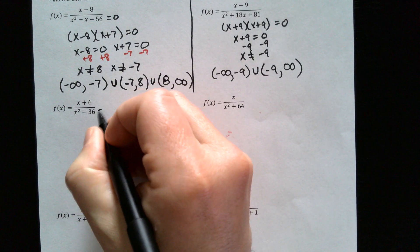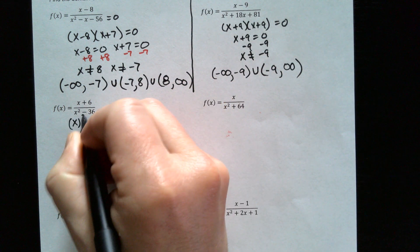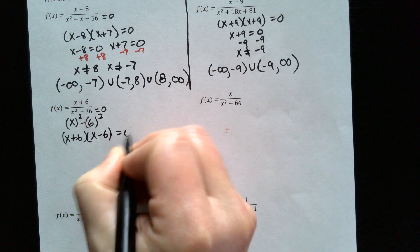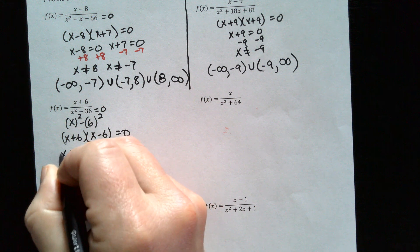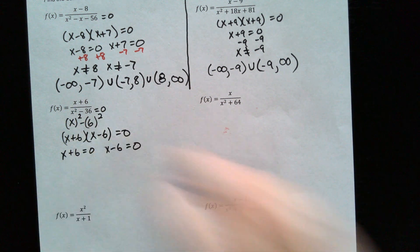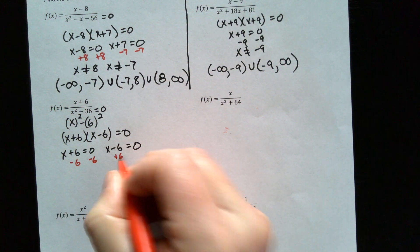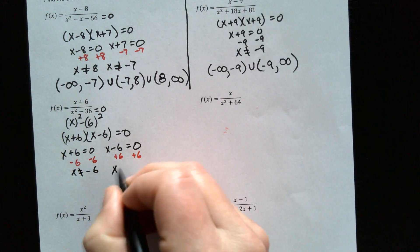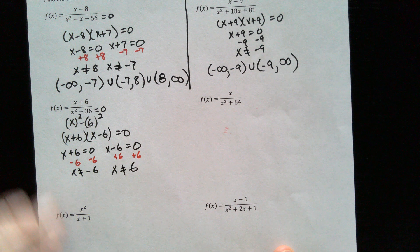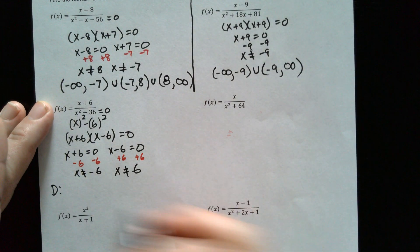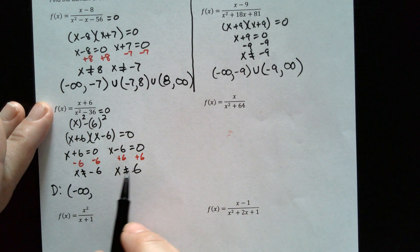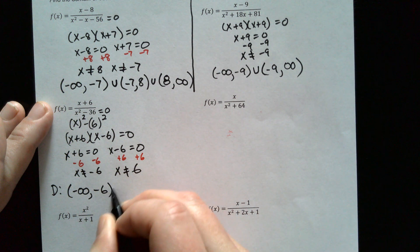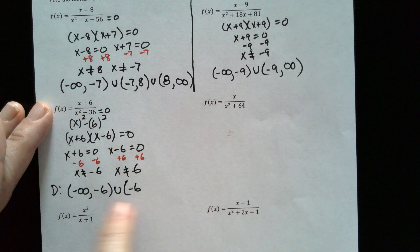Let's try this one. We set the bottom equal to zero and solve. This is a difference of squares, so it's going to be x squared minus 6 squared. That factors as (x plus 6)(x minus 6) equals zero. Solving both: x plus 6 equals zero and x minus 6 equals zero — we subtract 6 here and add 6 there. That gives us x equals negative 6 as an excluded value, and x equals 6 as an excluded value. So let's write the domain starting from negative infinity. We increase until we hit negative 6 first, so it's negative infinity to negative 6 with parentheses, then union, then parentheses negative 6 — just like we did before.